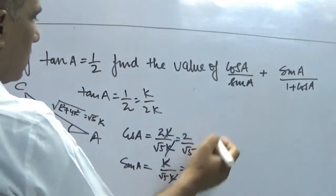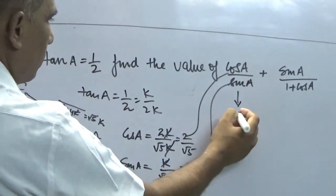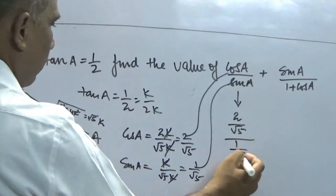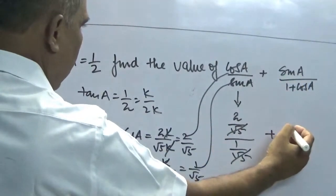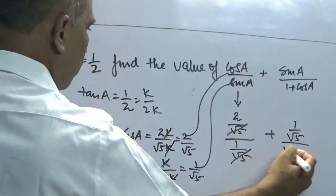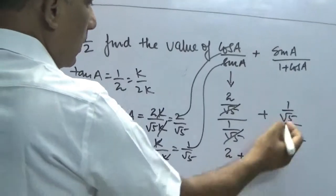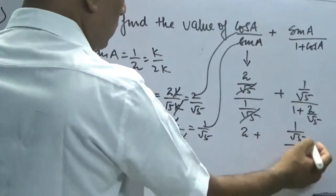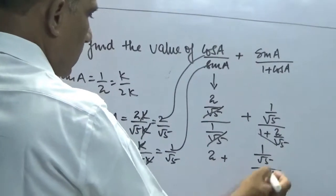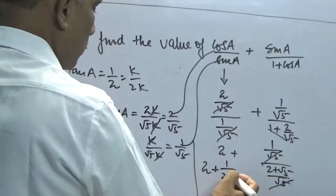Now we can substitute it here. So let's put this value here and this value here. So this will give us (2/√5)/(1/√5), which equals 2. Here we will have sin A, which is 1/√5, divided by 1 + cos A, which is 2/√5. So here we will get (1/√5)/((√5 + 2)/√5). Here we need to take the LCM, it will be (2 + √5)/√5. This gets cancelled. So it gives us (2 + 1)/(2 + √5).